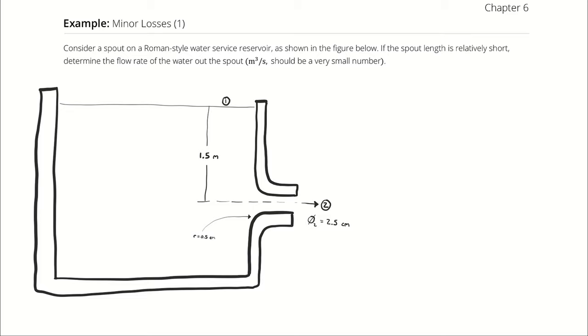When it says spout length is relatively short, that's indicating to us that we can neglect the frictional losses due to the straight section of spout. Therefore, the only frictional losses we'll account for are the minor losses associated with the round entrance to the pipe here.